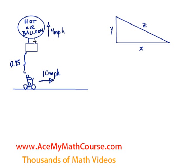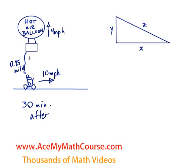A hot air balloon is rising at a rate of 4 miles an hour, while a bicycle directly below the hot air balloon is traveling at 10 miles an hour. At what rate is the distance between the balloon and the bicycle increasing 30 minutes after the bicycle is directly below the hot air balloon, given that at that time the hot air balloon was exactly a quarter mile — 0.25 miles — above the bicycle?